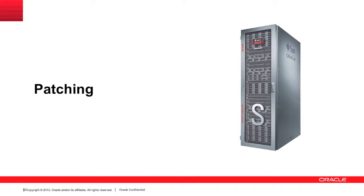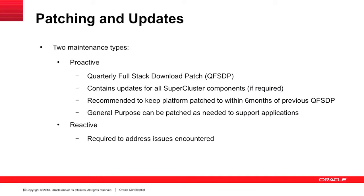The last thing to talk about is patching. We released the QMU - I call it the QMU, the quarterly maintenance update. It's officially called the quarterly full stack download patch update. It comes out every quarter and we advise you to upgrade all the components within the rack: the storage cells, the compute nodes, the switches if they're deemed necessary, to ensure everything's at a base level. You can patch your general purpose domains if you have application requirements, but everything else has to be kept at the same level to ensure the best possible health. If you do encounter issues, you can patch as recommended by support.